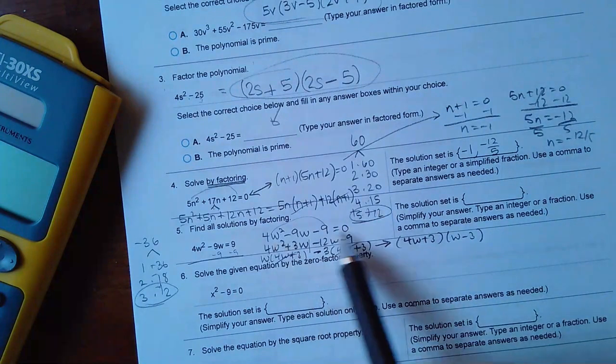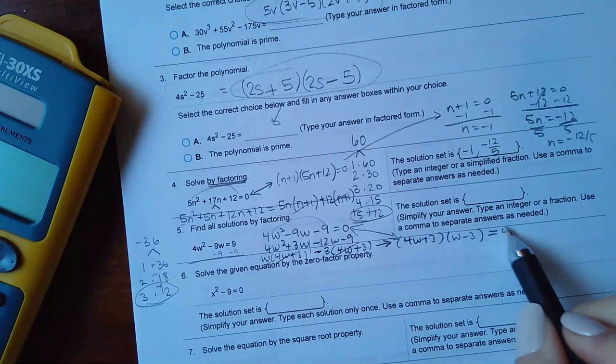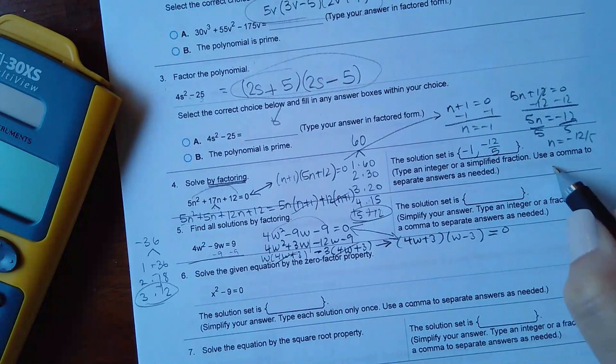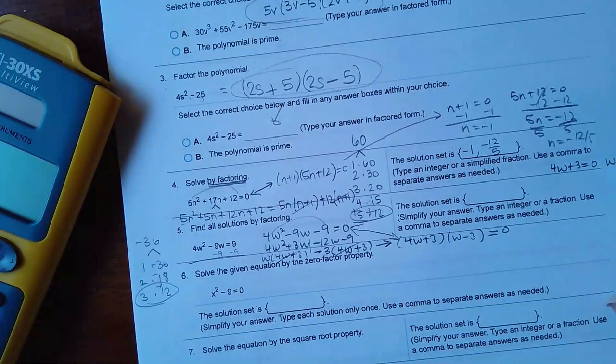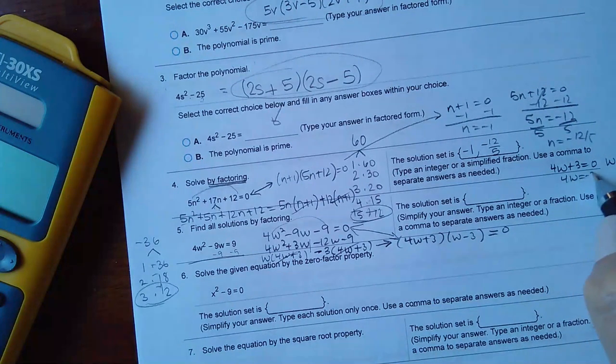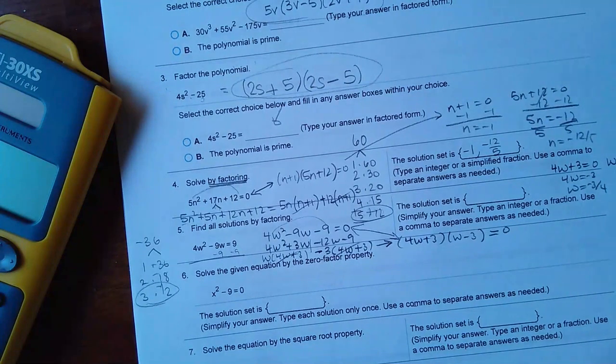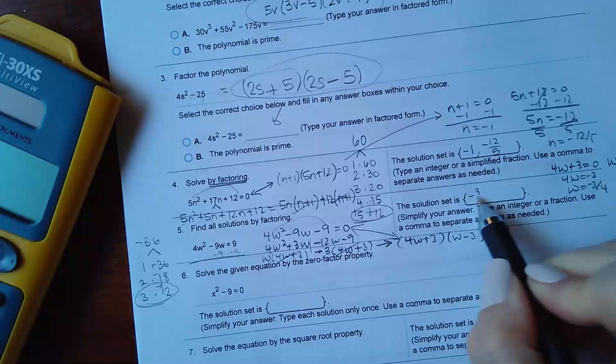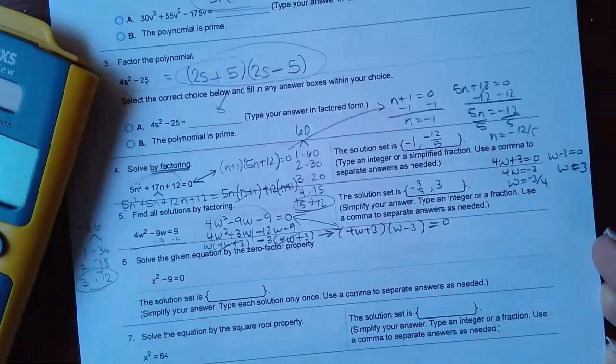If I factor out 4w plus 3 they have in common I'm left with w minus 3. Then if this equation becomes the same as that equation so it's still equal to 0, and then you would set each factor equal to 0. Here I would minus 3 over and then I would divide by 4. Here I would add 3 over. So my answers are negative 3 over 4 and 3.